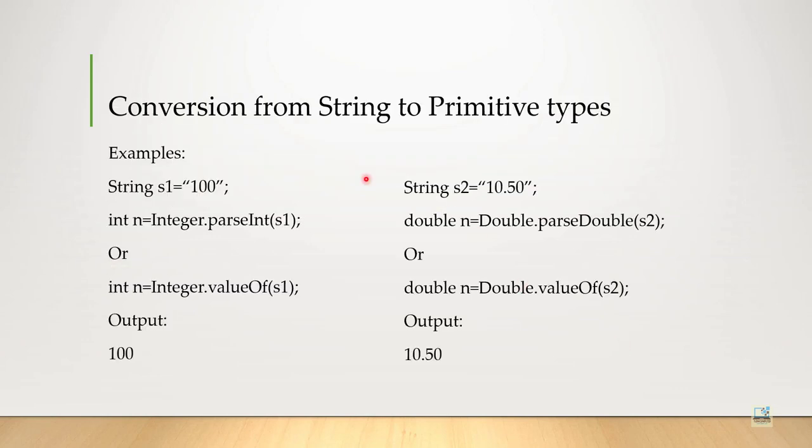How to convert string to primitive data? We will see some examples directly. String s1 equal to "100". This is a string variable s1 which is containing a value 100.